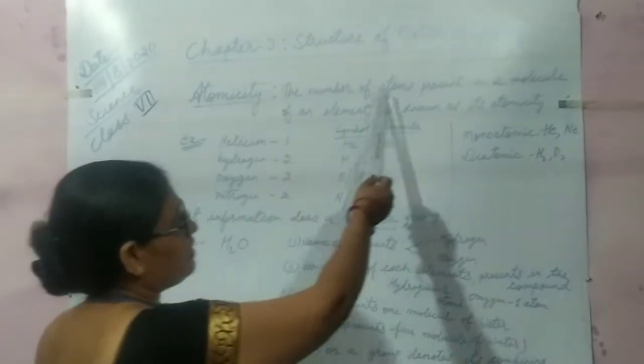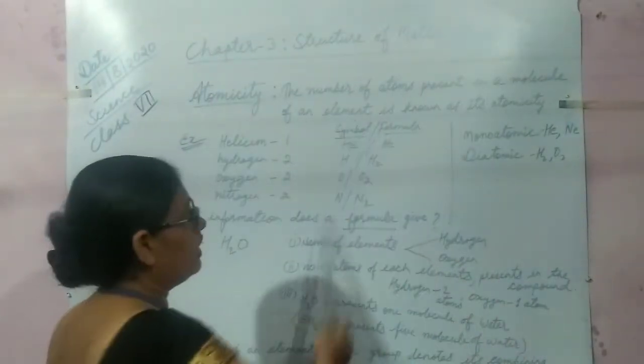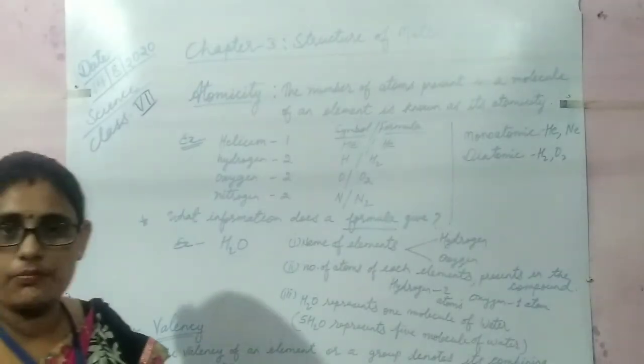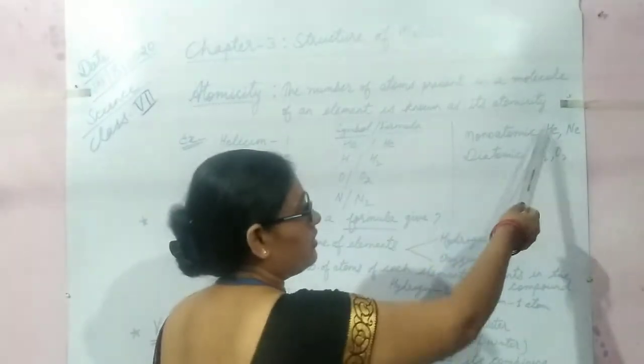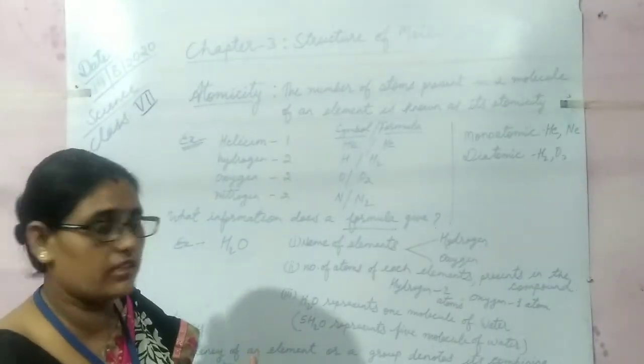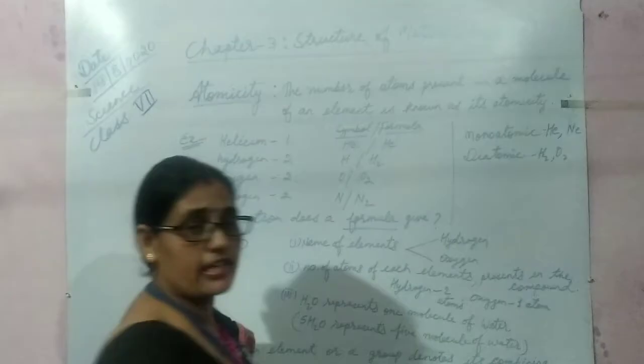Atomicity: the number of atoms present in a molecule of an element is known as its atomicity. The atoms of some elements exist freely in nature, like helium and neon. They exist freely and independently in nature, so they are known as monoatomic.